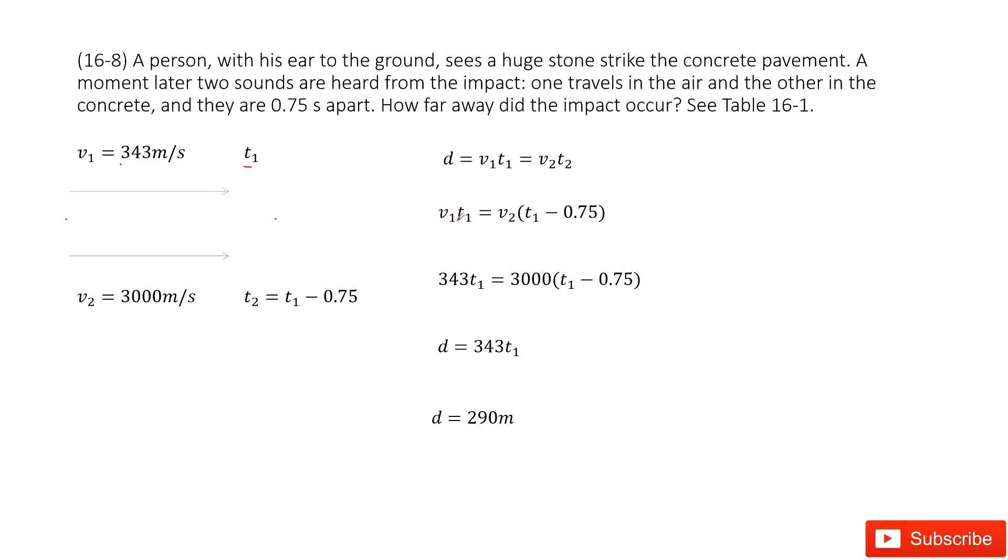Now we input the known quantities: t2 as t1 minus 0.75. Then input all the numbers and you can get t1.